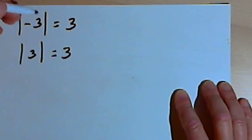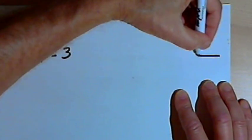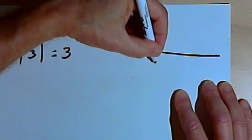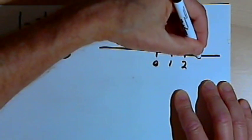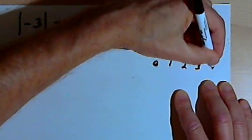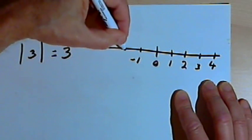And one of the ways people understand this is they talk about absolute value as a distance. So if I have a number line, I'll put a 0 in the middle of the number line, and to the right of the 0, I'll put in 1, 2, 3, and 4, and then to the left of the 0,